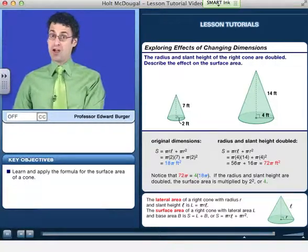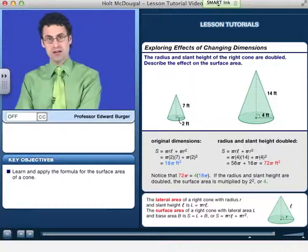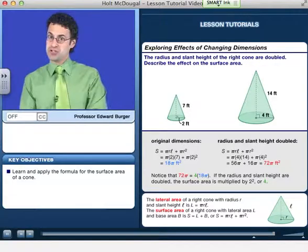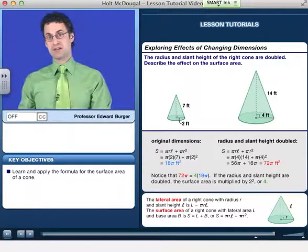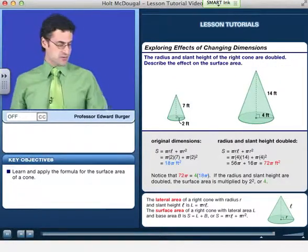Surprising? No, I hope it's not too surprising at this point, because when you think of area, remember, it's units squared. And so if we change each length by a factor of 2, that should be 2 times 2, which would give us a factor of 4 for the surface area.